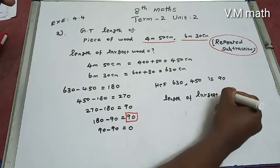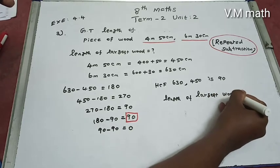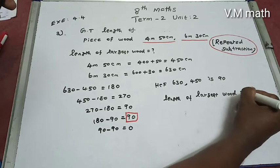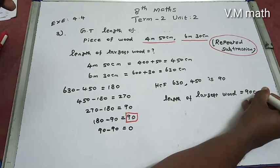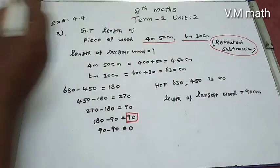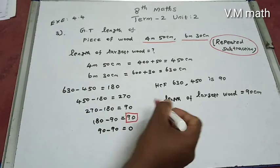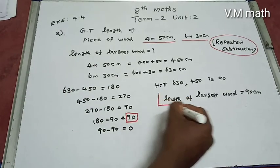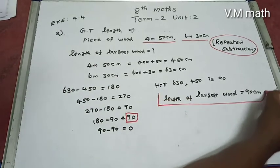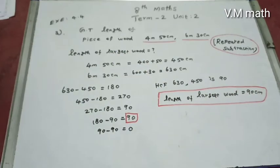Length of largest wood equal to 90 cm. This is the final answer. Length of largest wood is 90 cm.